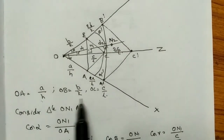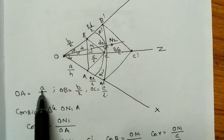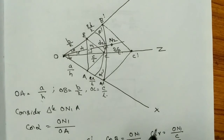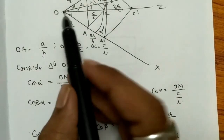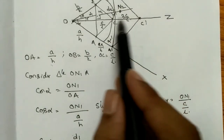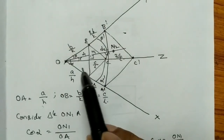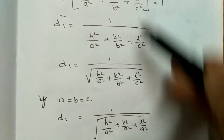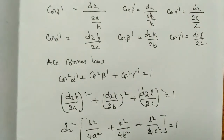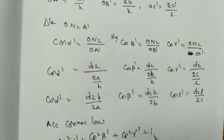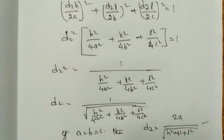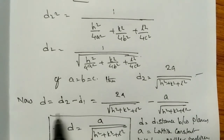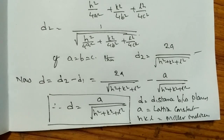To summarize: I took a three-dimensional rectangular structure with two planes, derived the intercepts as a/h, b/k, c/l, and used the triangle ON1A with cosine relations. By applying the cosine law I proved d1 and d2, then found the final expression d = d2 − d1 = a/√(h²+k²+l²). This is an important essay question for B.Tech and B.Sc. students.